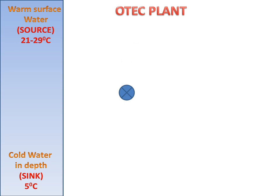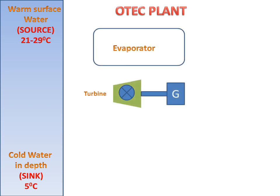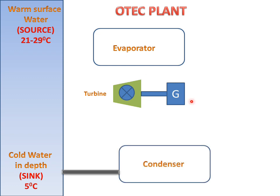The parts of the OTC plant include an evaporator and turbine which is connected to the generator. We will also have a condenser which connects to the cold water at depth. The evaporator connects to the surface water of the ocean. The surface water, which is at 21 to 29 degrees Celsius, will go to the evaporator.